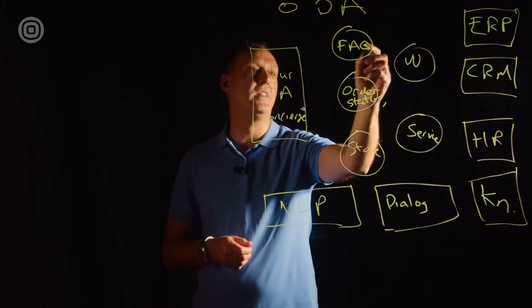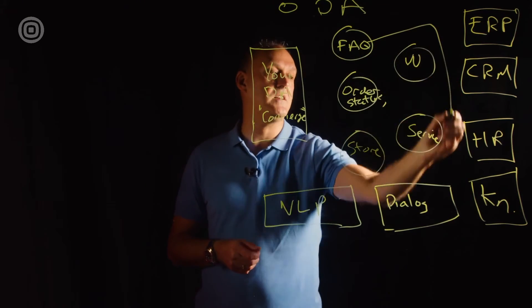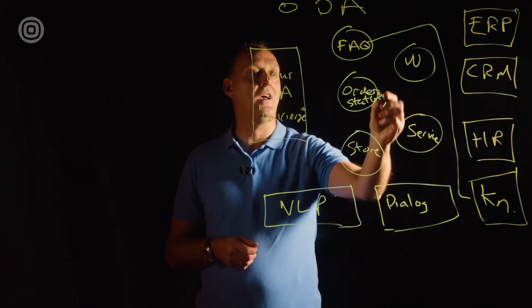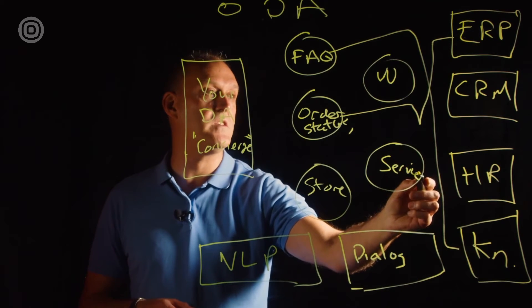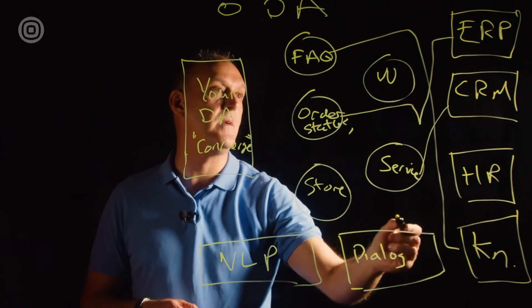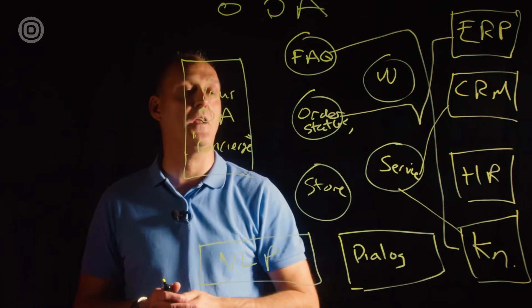So each one of these skills, maybe the FAQ one, perhaps that will have access to your knowledge management. Your order status is probably going to talk to your ERP system. Your service is probably going to be talking to CRM and to knowledge management.